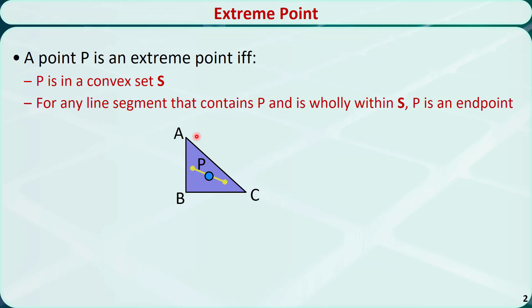If we have a point P that is inside S, then it's not an extreme point because we can draw a line segment that passes through P, but P is not the endpoint. If we have a point Q that is on the line segment AC, then it's not an extreme point because it's not an endpoint.